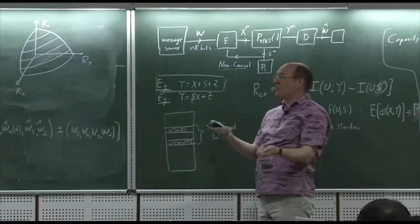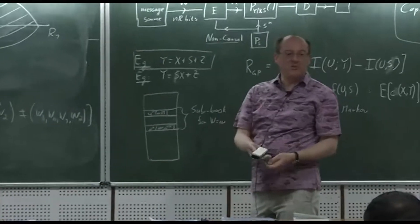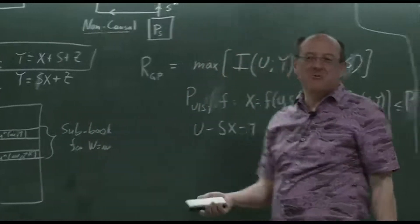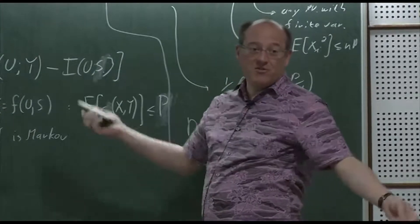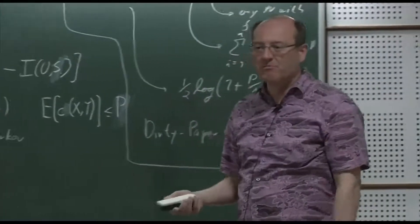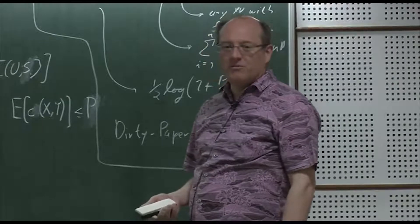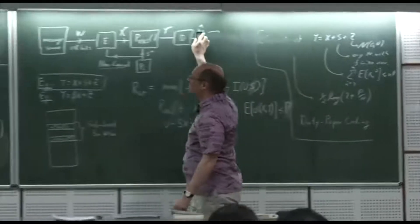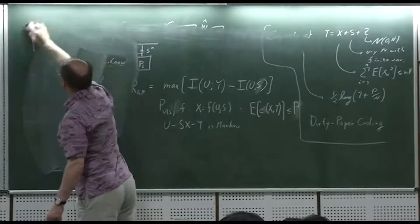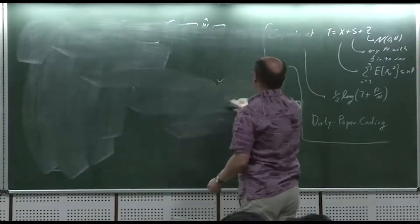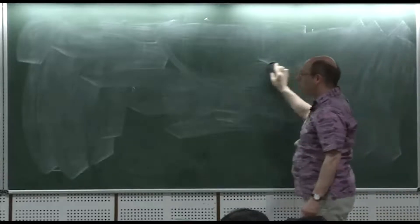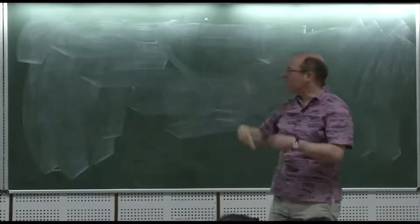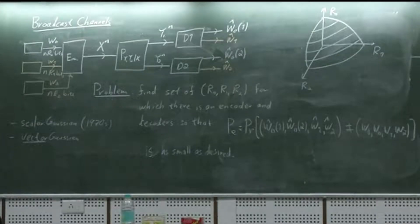We have certain achievable regions and outer bounds. Some people believe the achievable regions we have are optimal, but we don't really know. It remains one of the most outstanding open problems in information theory. Solving the broadcast channel capacity region — showing Marton's coding region or a variation is optimal — would make you quite well known.